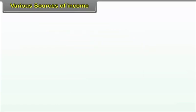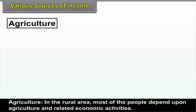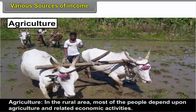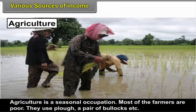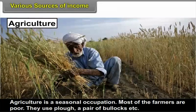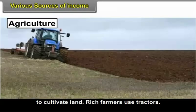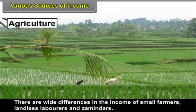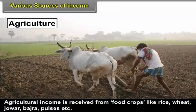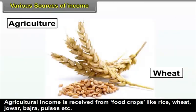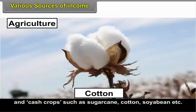3.3 Various Sources of Income. Agriculture: In rural areas, most people depend upon agriculture and related economic activities. Agriculture is a seasonal occupation. Most farmers are poor and use a plough, a pair of bullocks, etc. to cultivate land, while rich farmers use tractors. There are wide differences in income of small farmers, landless labourers, and zamindars. Agricultural income is received from food crops like rice, wheat, jowar, bajra, pulses, etc., and cash crops such as sugarcane, cotton, soybean, etc.